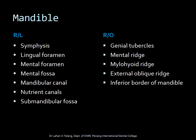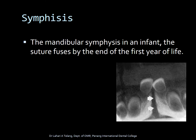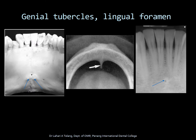The mandible also has important radiolucent and radiopaque anatomical landmarks. The symphysis is generally only seen in infants — it is the suture which fuses at the end of the first year of life. The genial tubercles are a radiopaque structure seen on the lingual surface of the mandible, prominently visible in an edentulous arch. The lingual foramen seen here is evident in only a certain portion of the population, not everyone.